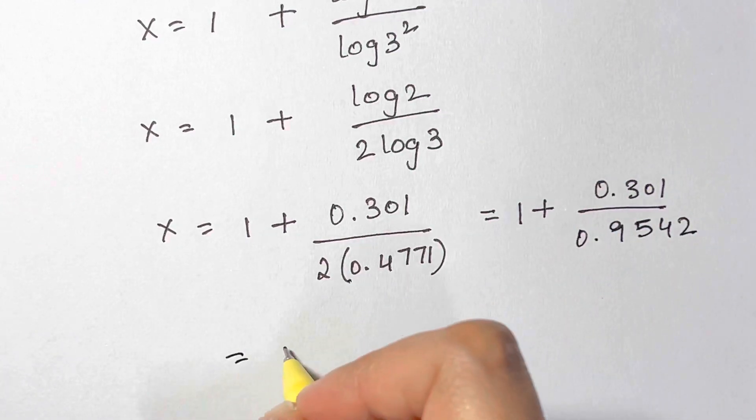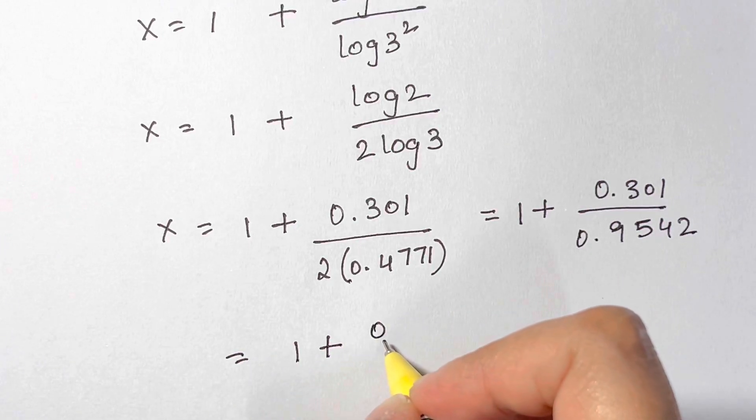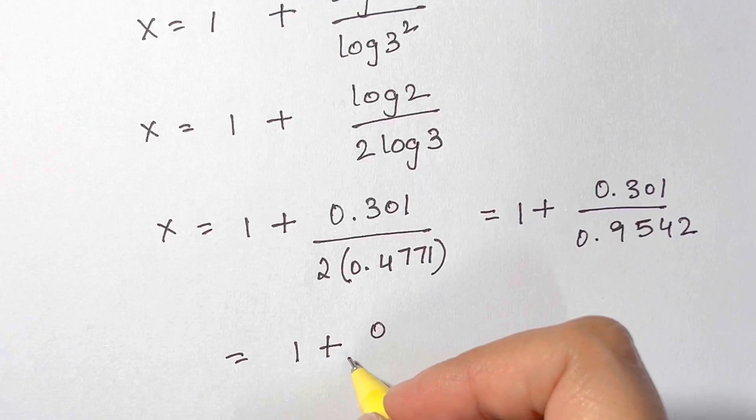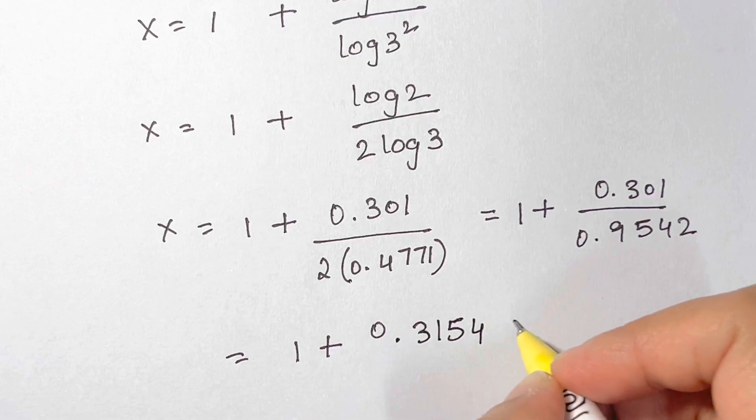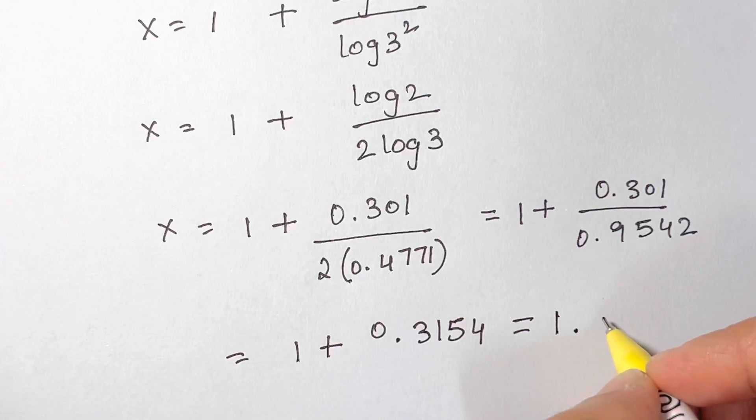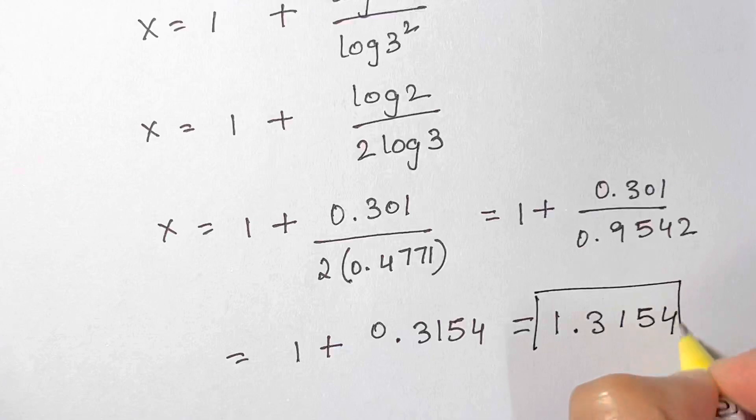And when we simplify, we get 1 plus 0.301 divided by 0.9542, which is 1 plus 0.3154, and that equals 1.3154. That's your answer.